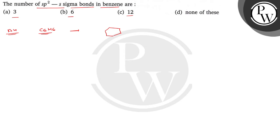This is the structure of benzene where all the carbon atoms are SP2 hybridized. What is the hybridization of carbon atoms? It is SP2. All the carbon atoms are SP2 hybridized.